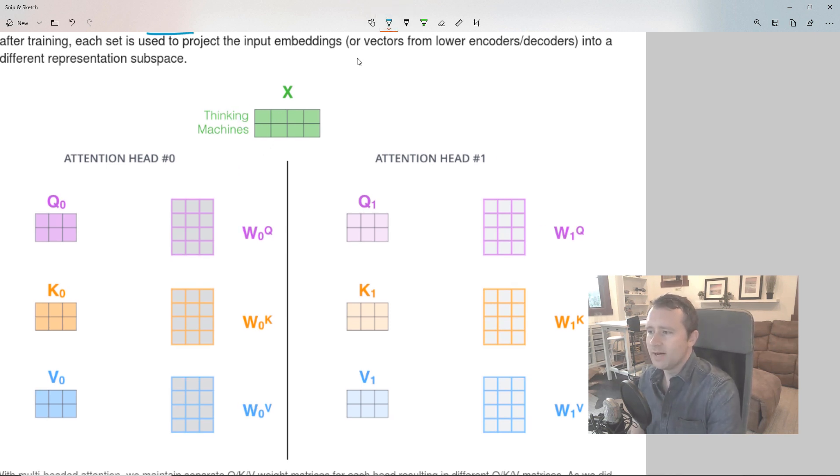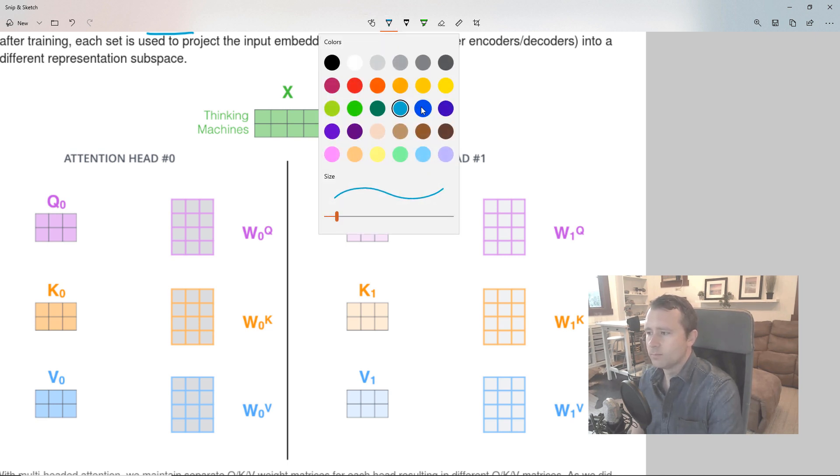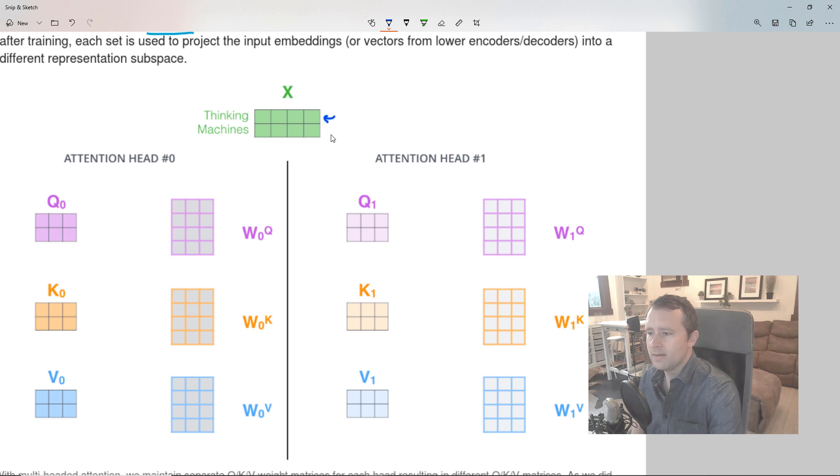So he's got a nice illustration here to kind of make this more concrete. So up top, we've got our word embeddings. Here's the word embedding for thinking, and here's the embedding for machines. And remember, the first step is to multiply the embedding vectors by these three matrices, these three projection matrices, the query, key, and value matrices.